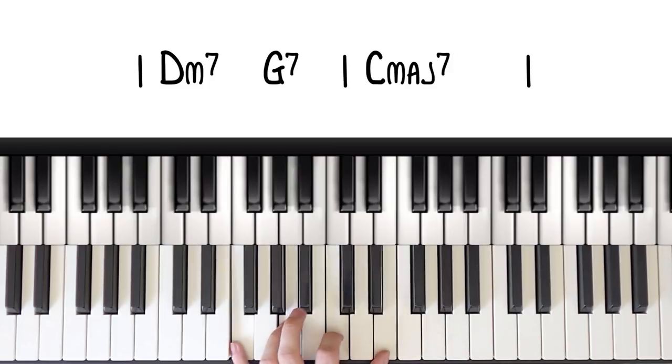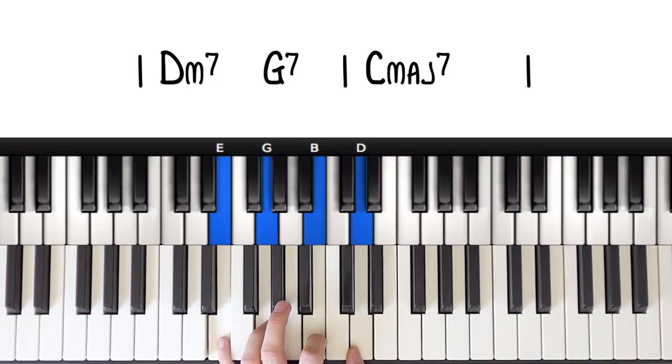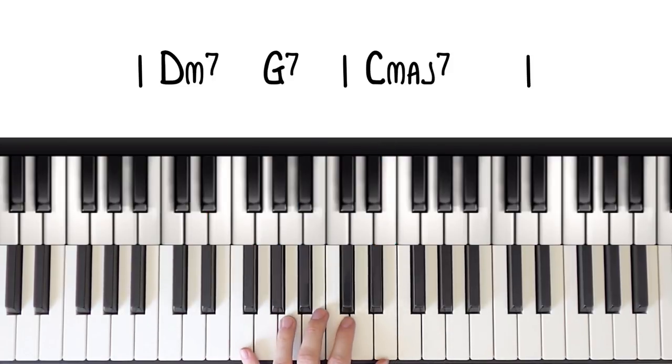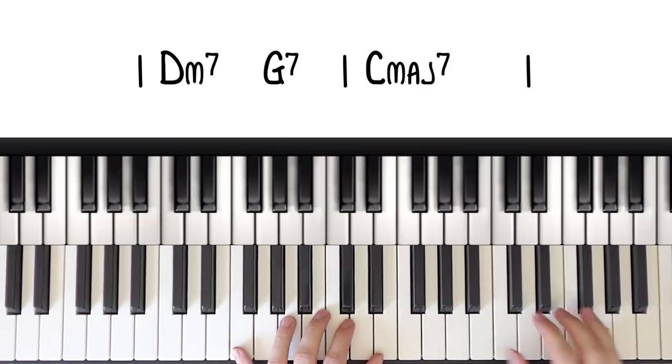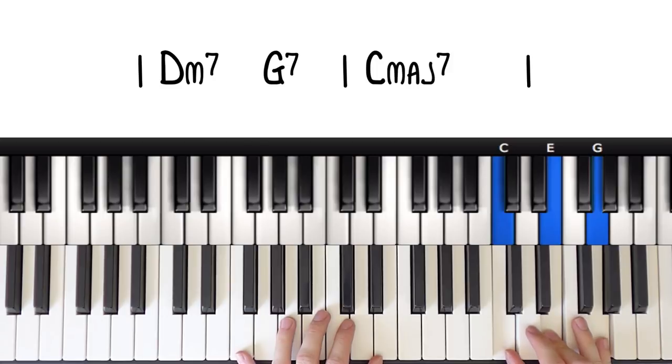So the best way to think about this is we're playing a 2-5-1 in C major right? So up here just plonk a C major triad and this is going to give us our structure for the pattern.